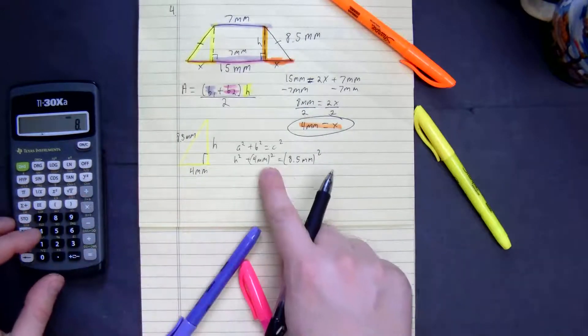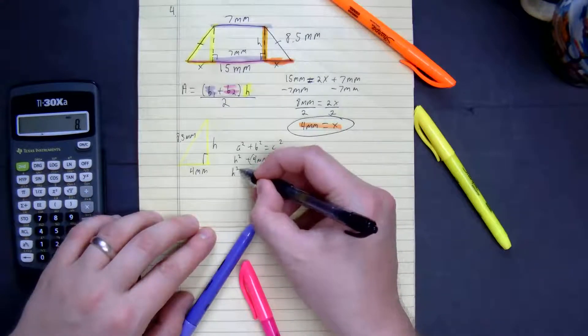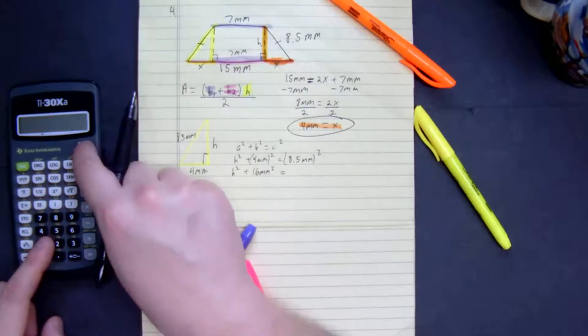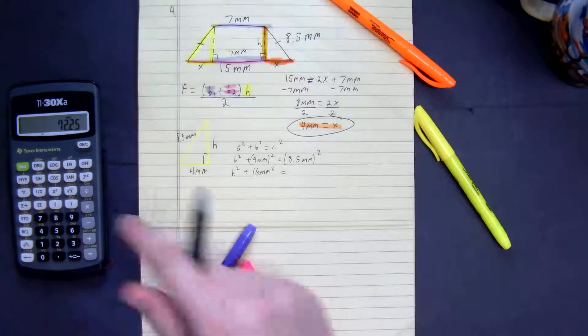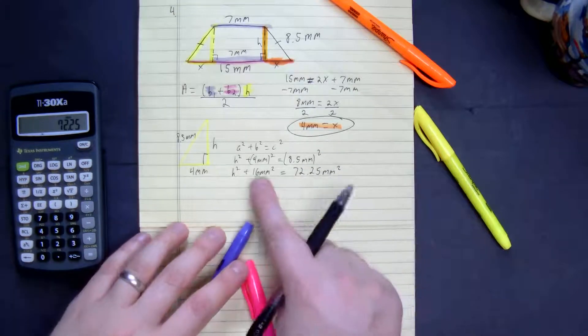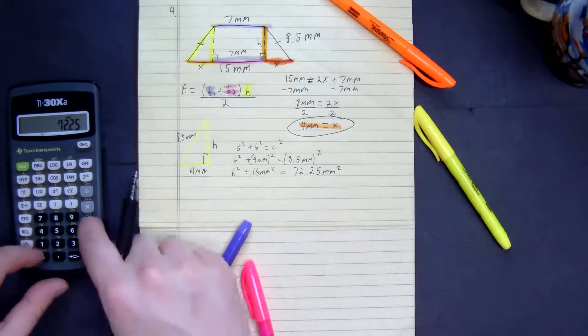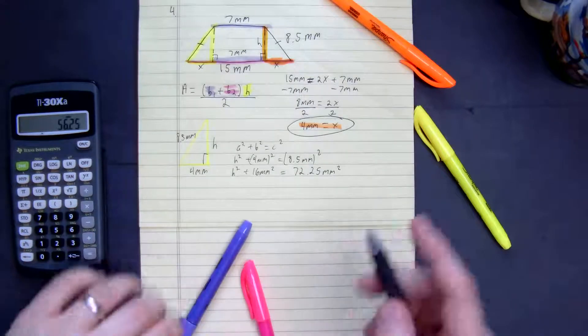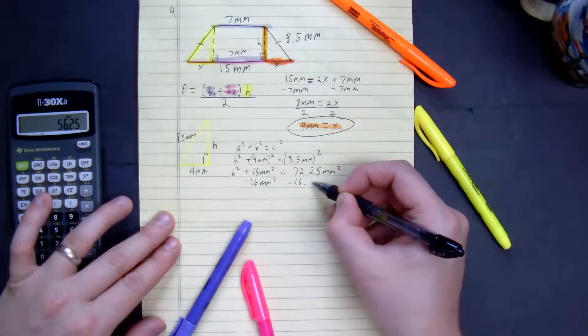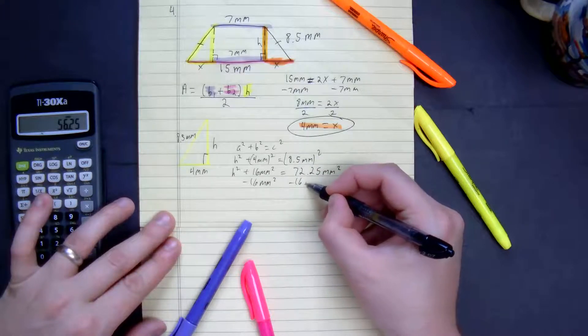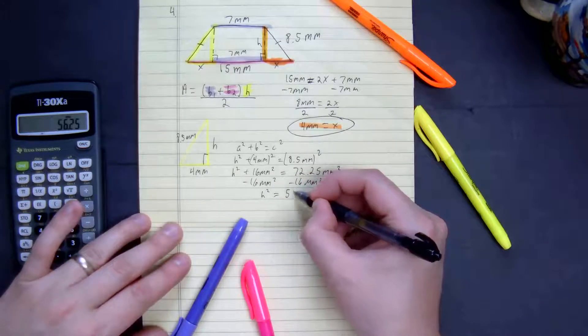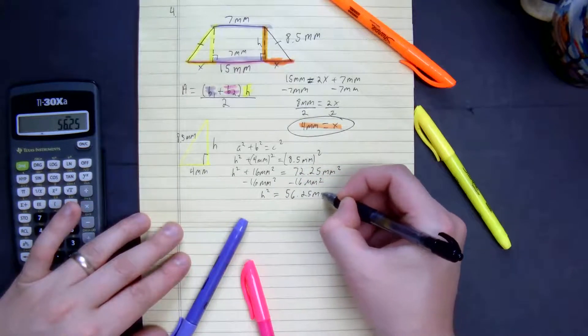So from here, 4 times 4 is 16. So we get h squared plus 16 millimeters squared equals 8.5 squared, we get 72.25 millimeters squared. Find the difference. Subtract 16. You get h squared equals 56.25 millimeters squared.